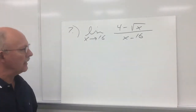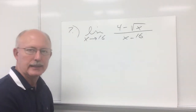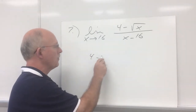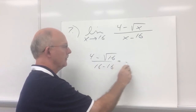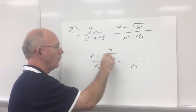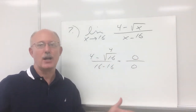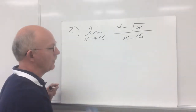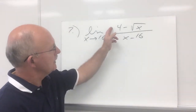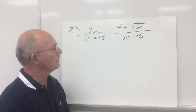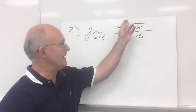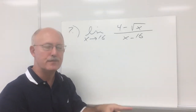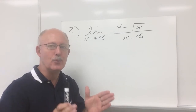This is our last example, and it has a radical in it, which makes it a little difficult for many students. We're looking for the limit as x approaches 16. If you try direct substitution, you get four minus the square root of 16 over 16 minus 16. The square root of 16 is four, so four minus four gives zero, and 16 minus 16 gives zero — zero over zero indicates a hole. We should be able to factor and cancel. Now, you see x minus square root of x in the numerator, and any binomial subtraction can be rewritten as a difference of two squares.